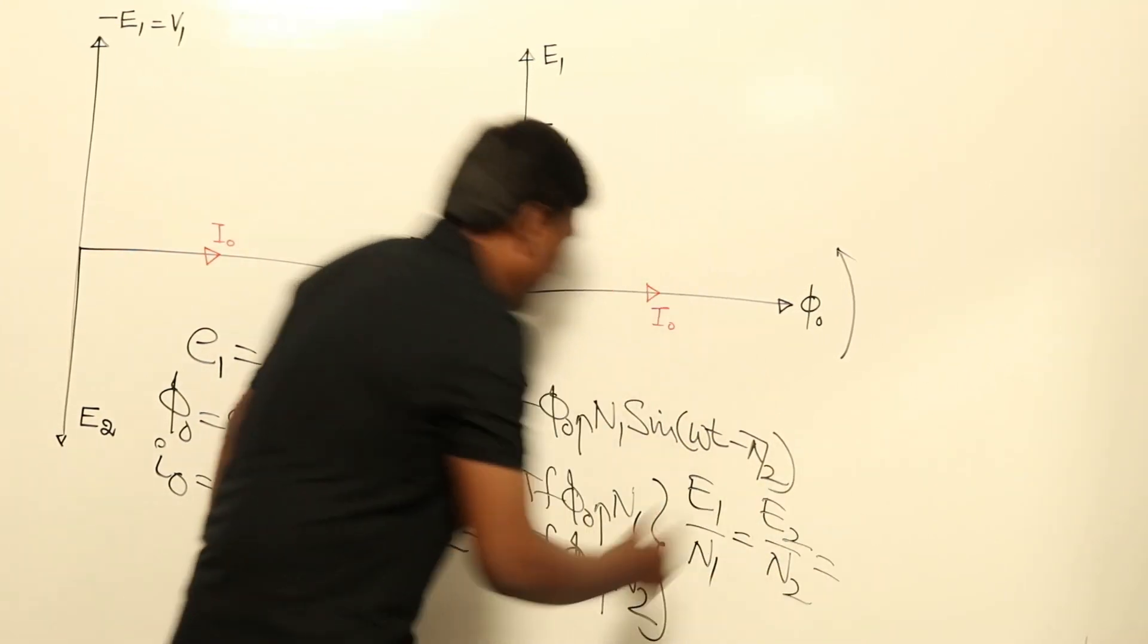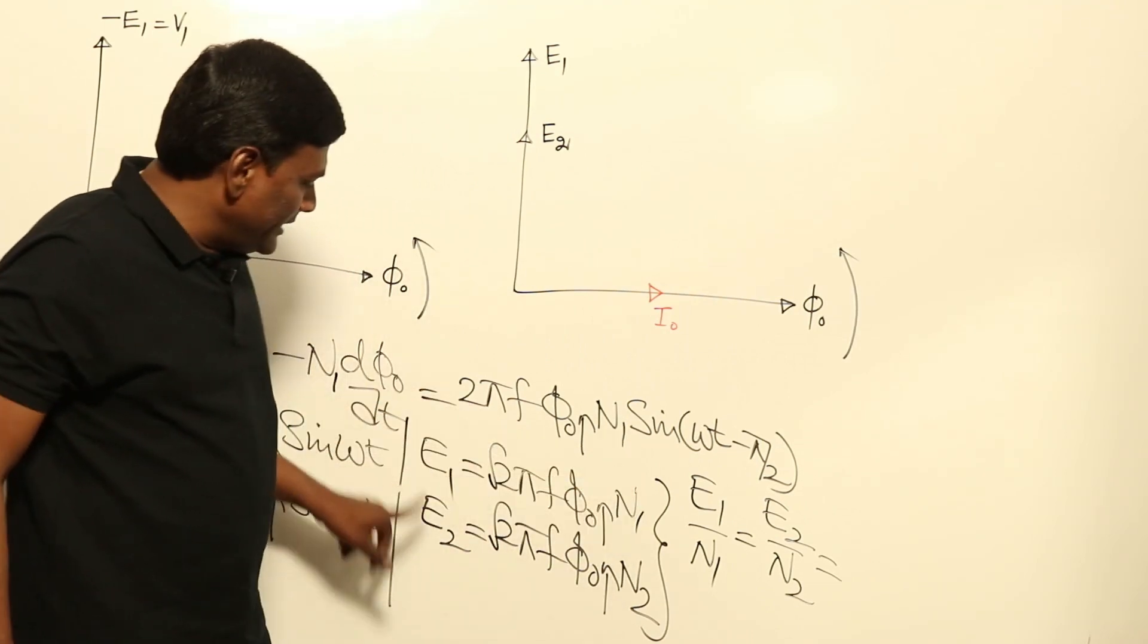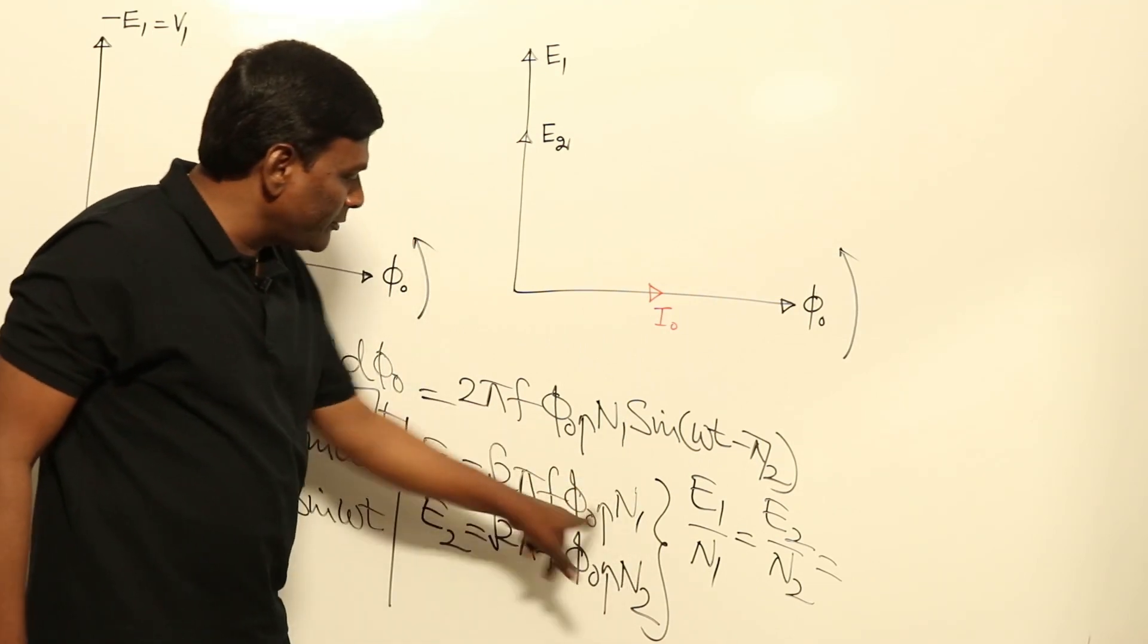That is E1/N1 equal to E2/N2 equal to root 2 π f Φ0 max. EMF per turn in primary is equal to EMF per turn in secondary.